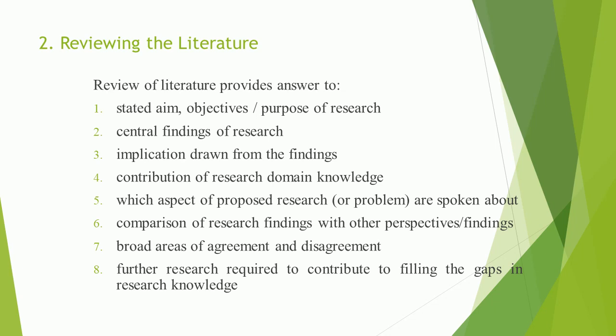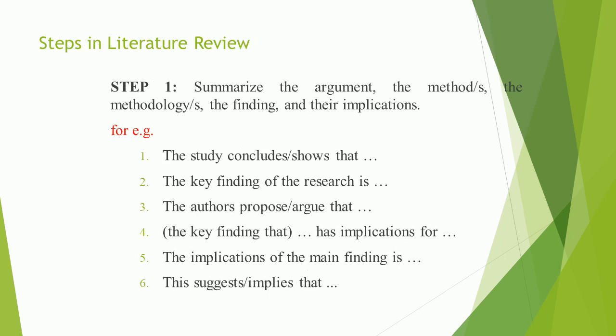Steps in Literature Review. Step 1: Summarize the argument, the method(s), the methodology(s), the finding, and their implications. For example: 'The study concludes/shows that...', 'The key finding of the research is...', 'The authors propose/argue that...', 'The key finding has implications for...', 'The implications of the main finding is...', 'This suggests/implies that...'